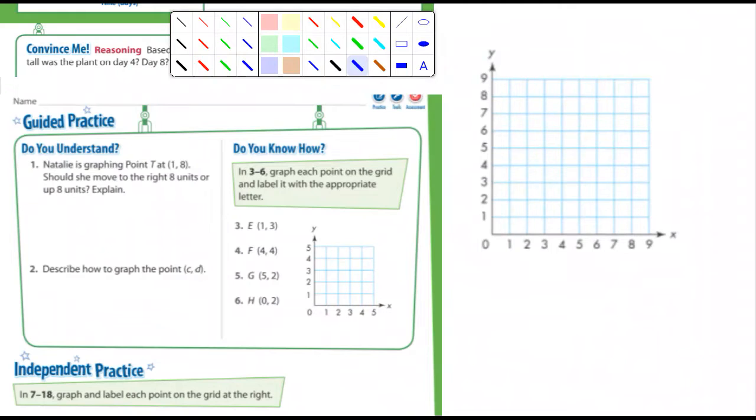Get a little bit bigger so everybody can see it. All right, here we go. Move this over. Okay. So again, Natalie is graphing a point. Point T at 1, 8.